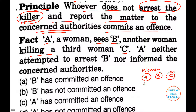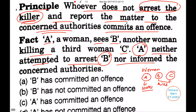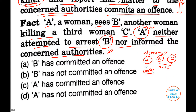So A witnesses B killing C — A is the witness. Now A neither attempts to arrest B, who is the criminal in our case, nor informs the concerned authority, police, or any legal authority.